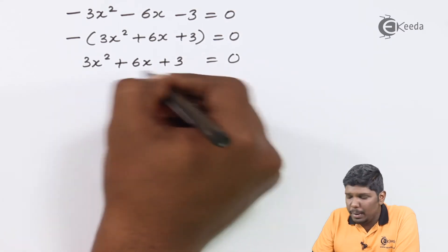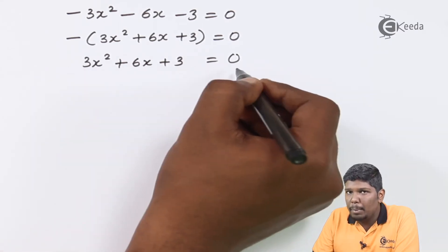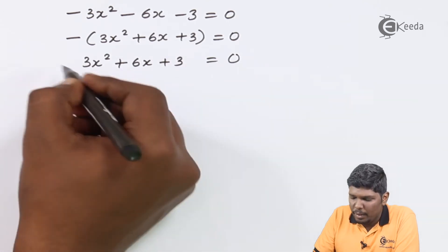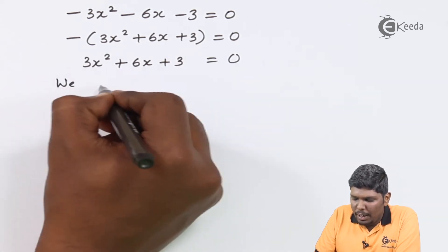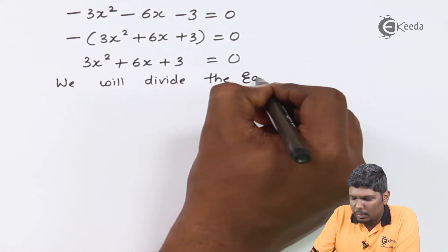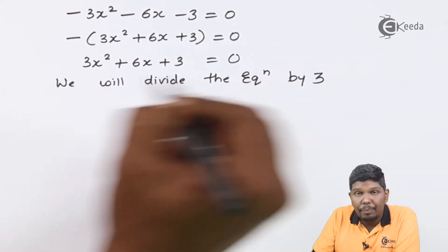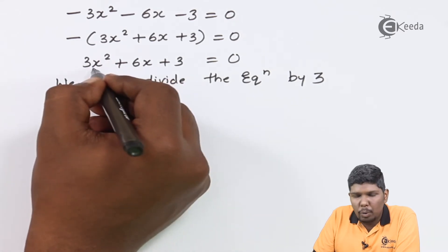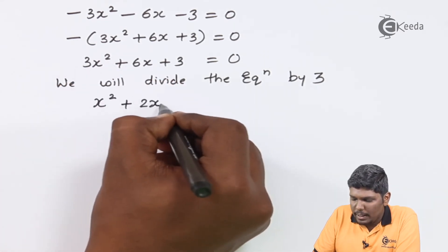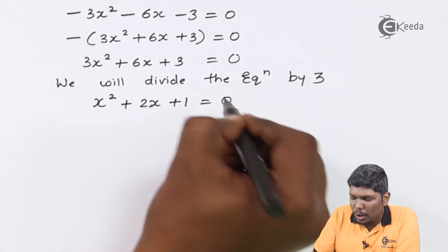Further this equation can be simplified by dividing each term by 3, as you can observe that each term is a multiple of 3. So we will divide the equation by 3. So if we divide 3x² by 3, we will get x² + 2x + 1 = 0.